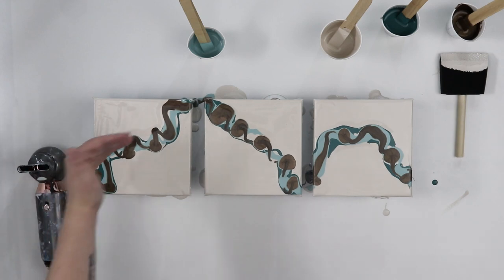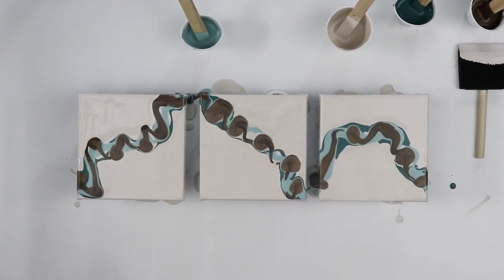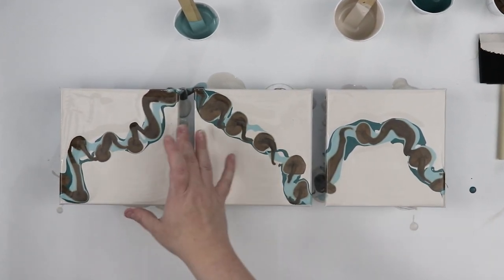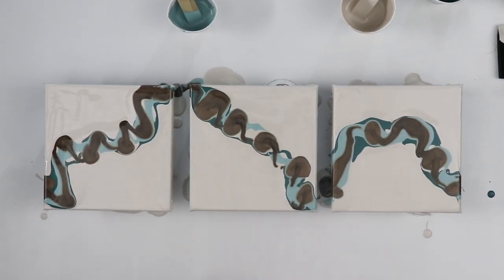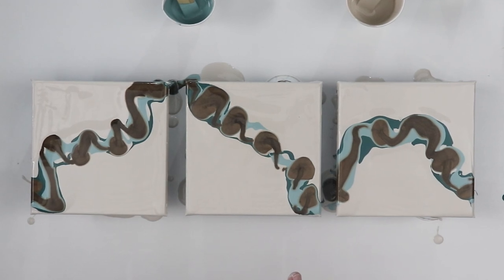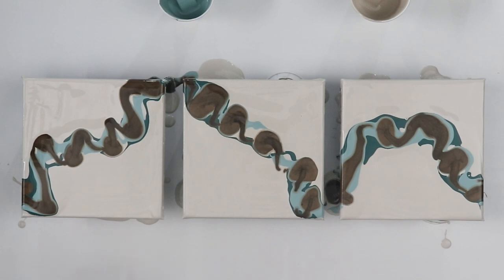So I'll probably blow from this angle and then go across and see what that looks like. I'm not going to worry about sometimes with the Dutch pour, you put more of your base coat down and then blow your base coat over the other colors to help create cells. I'm not going to do that. I don't want to add too much paint on my canvases. They're very small and I want them to dry well. So we'll see if this is enough paint. I think it will be plenty.